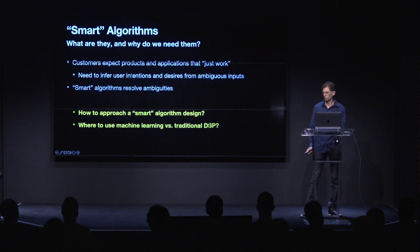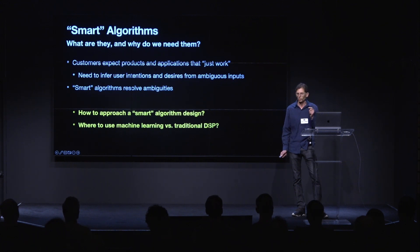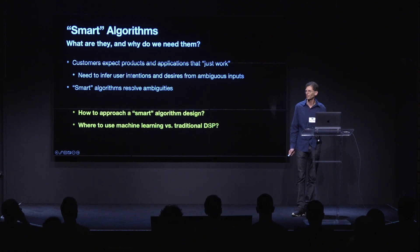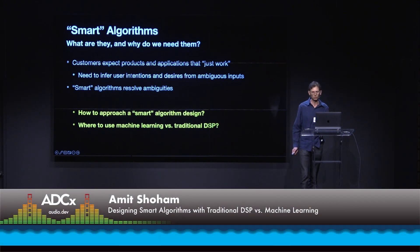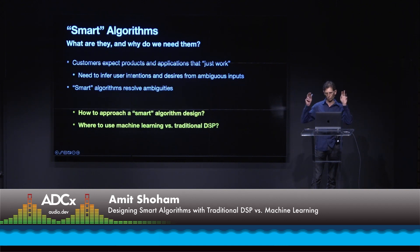For the purpose of this talk, I'm going to define smart algorithms as algorithms that resolve ambiguities. Customers increasingly expect our products and applications to magically just work and infer what the user wants to do and what they intend to do. When we resolve ambiguities for them and do something sensible in the face of ambiguities, that's when our applications and products feel smart.